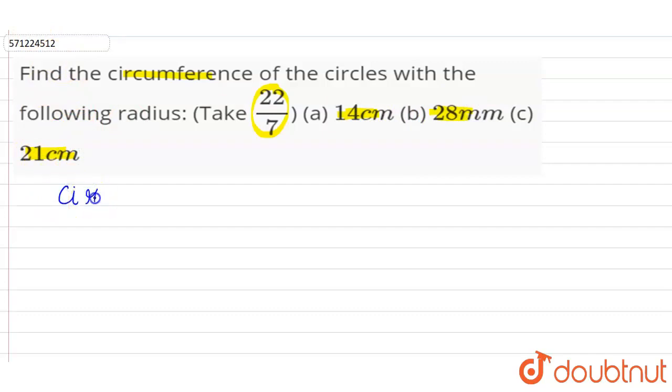So first, the formula for calculating the circumference of a circle: circumference of circle = 2πr.